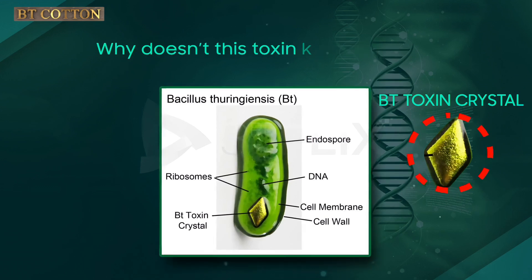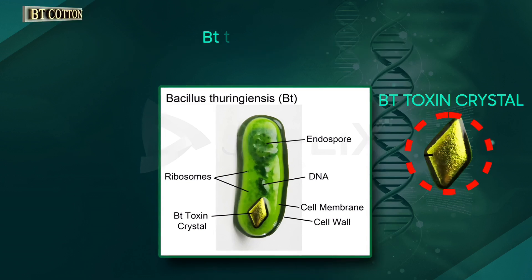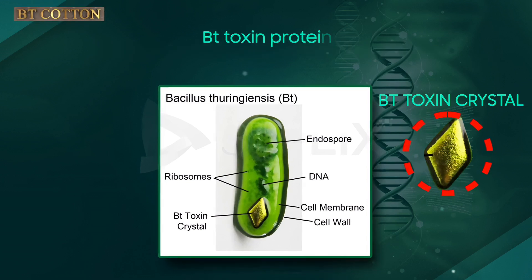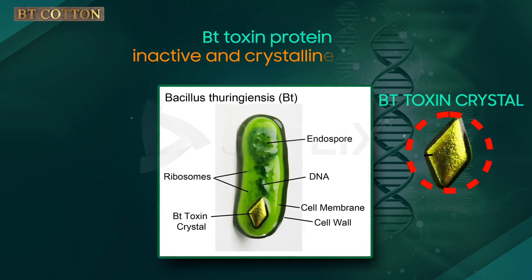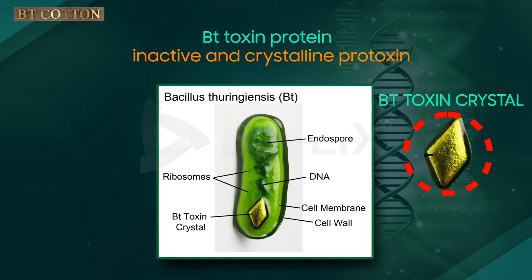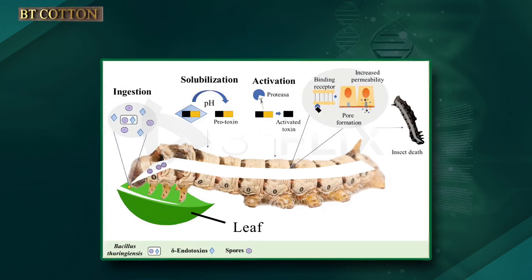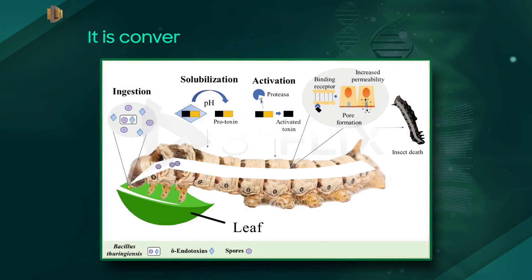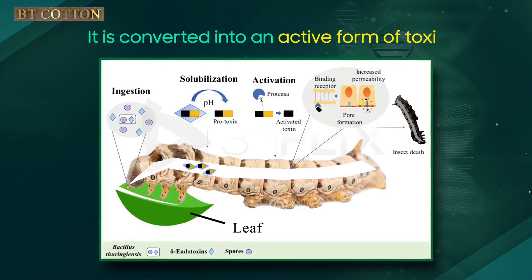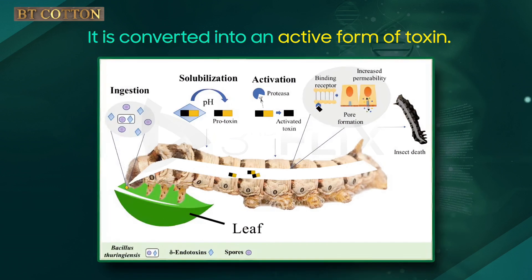Why doesn't this toxin kill the bacillus? Actually, the BT toxin protein exists as an inactive crystalline protoxin in bacteria. But once an insect ingests the inactive toxin, it is converted into an active form of toxin due to the alkaline pH of the gut, which solubilizes the crystals.